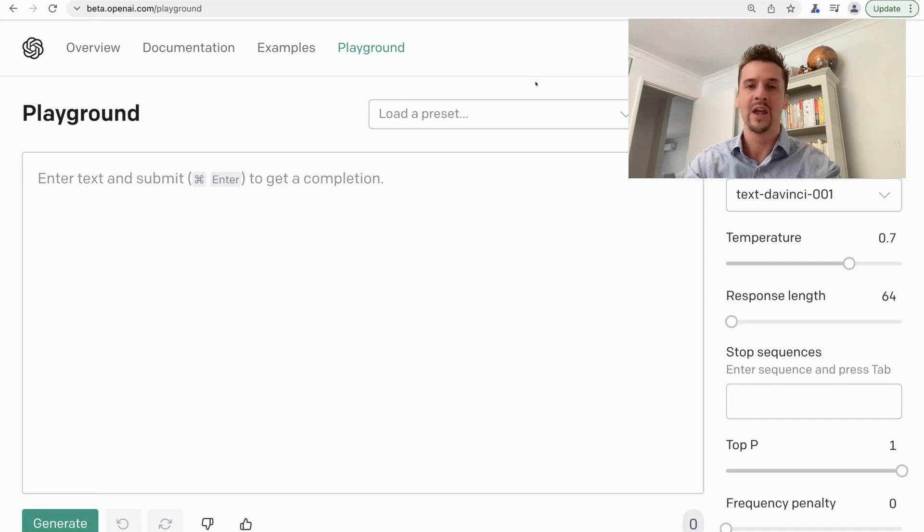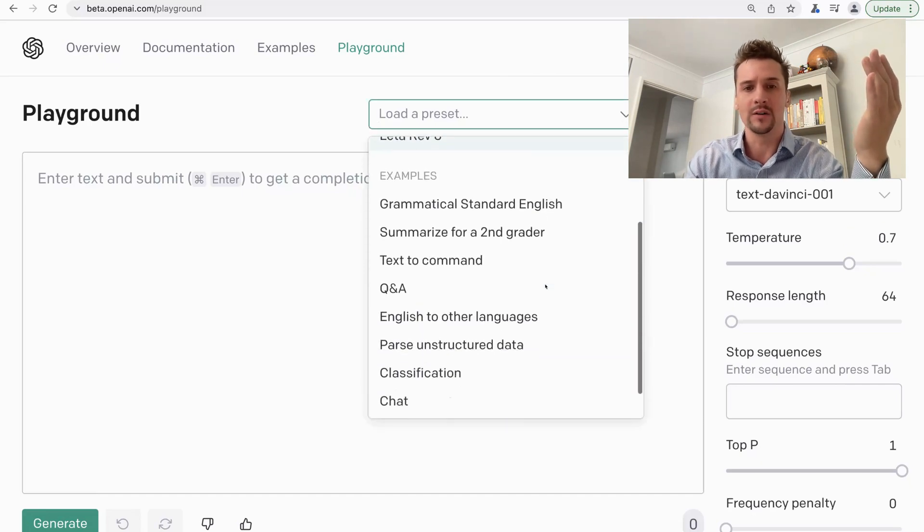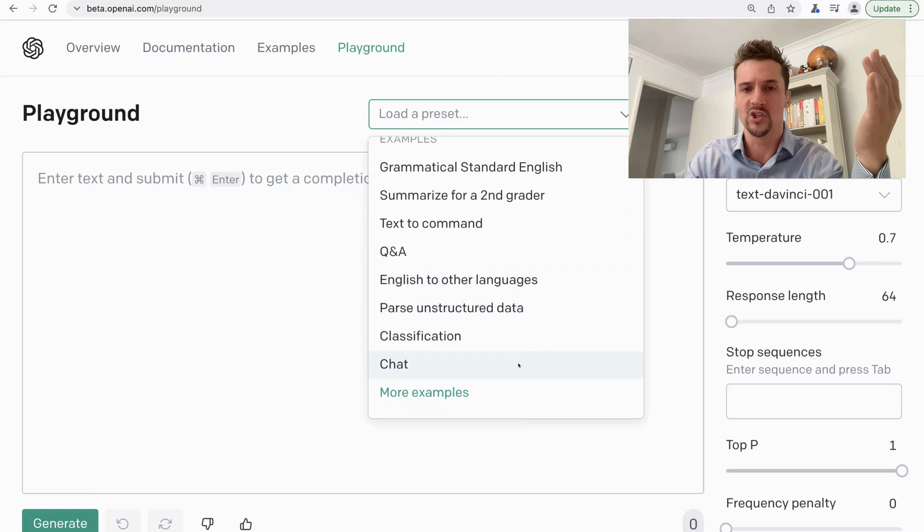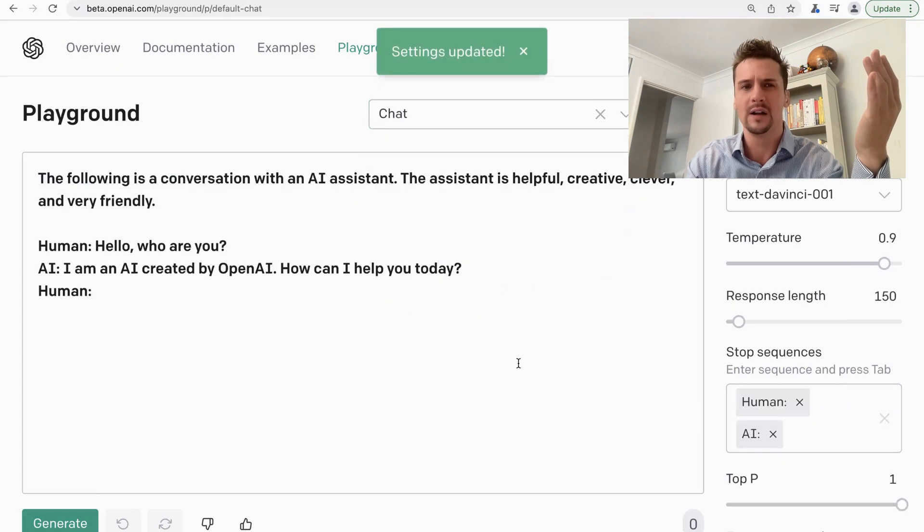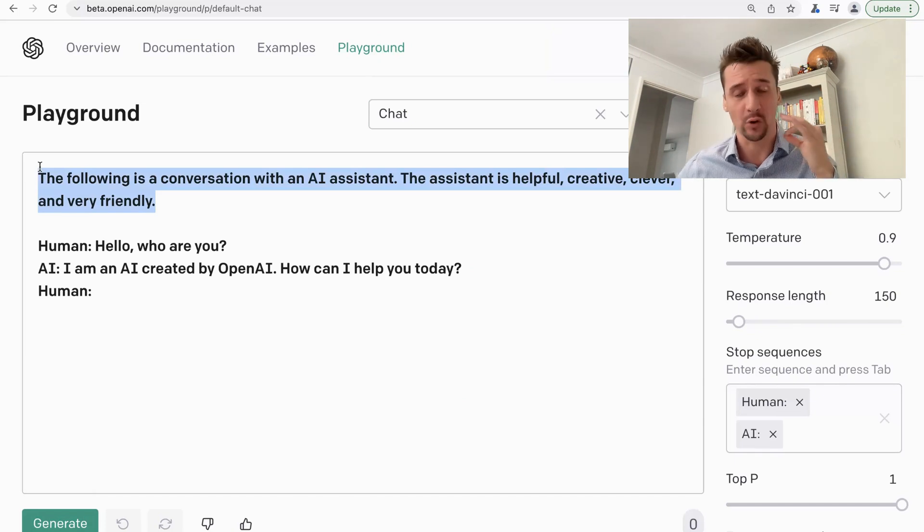OpenAI have provided a number of examples or presets here that you can lean on. There's one down the bottom here called Chat. It's been there for quite a while and it gives you some really interesting ideas for crafting a prompt for a chatbot. It's actually only two sentences: 'The following is conversation with an AI assistant. The assistant is helpful, creative, clever, and very friendly.' And away you go. This prompt actually works really nicely.